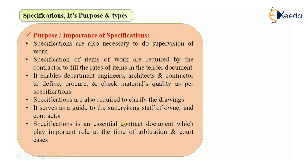Finally, specification is an essential contract document which plays an important role at the time of arbitration and court cases. For example, if there is a dispute between the contractor and owner — such as the contractor not using the same quality of material mentioned in the specification — the specification will be the proof at the time of arbitration. It will also help in court cases because it acts as a proof. So this was the video about specification, its purpose and types. Thank you.